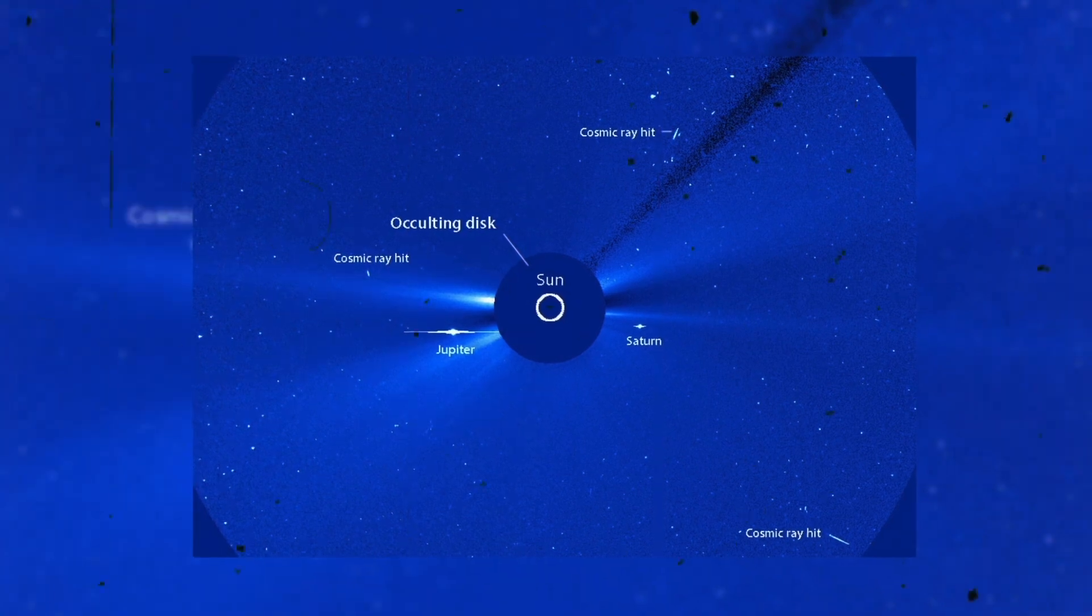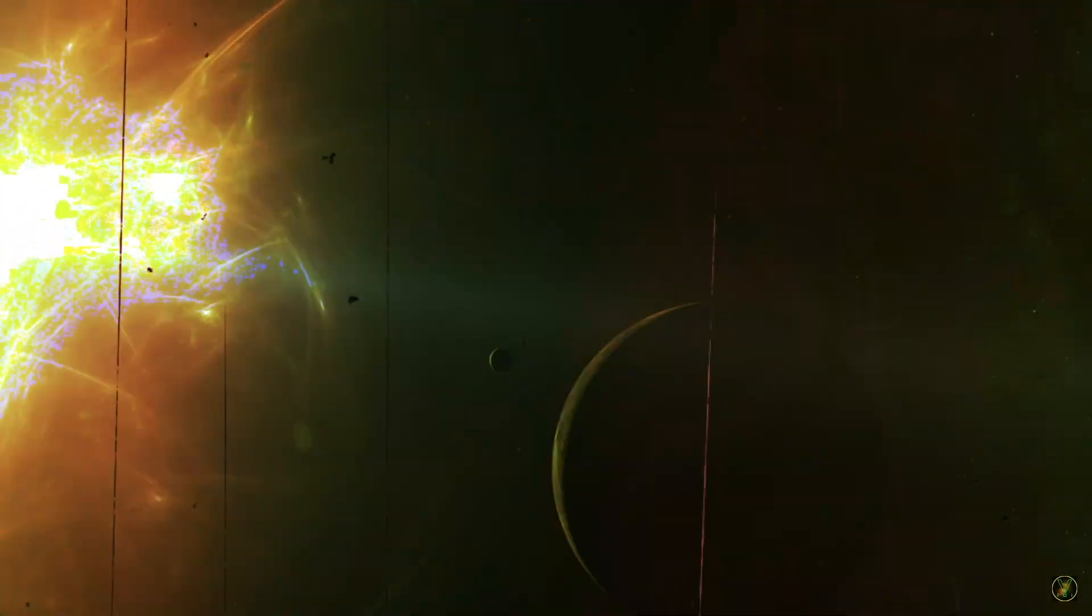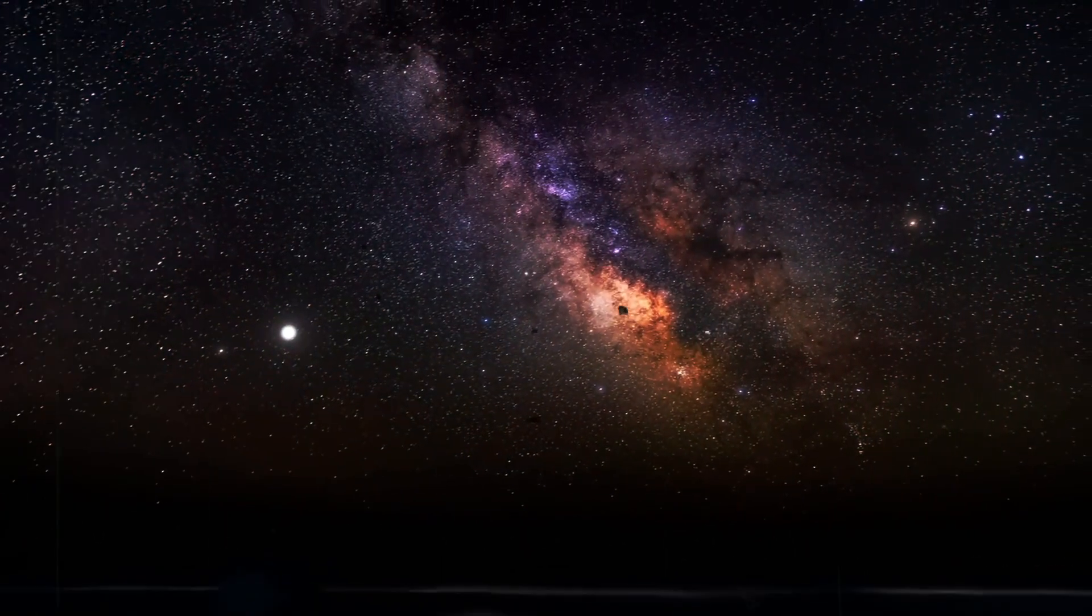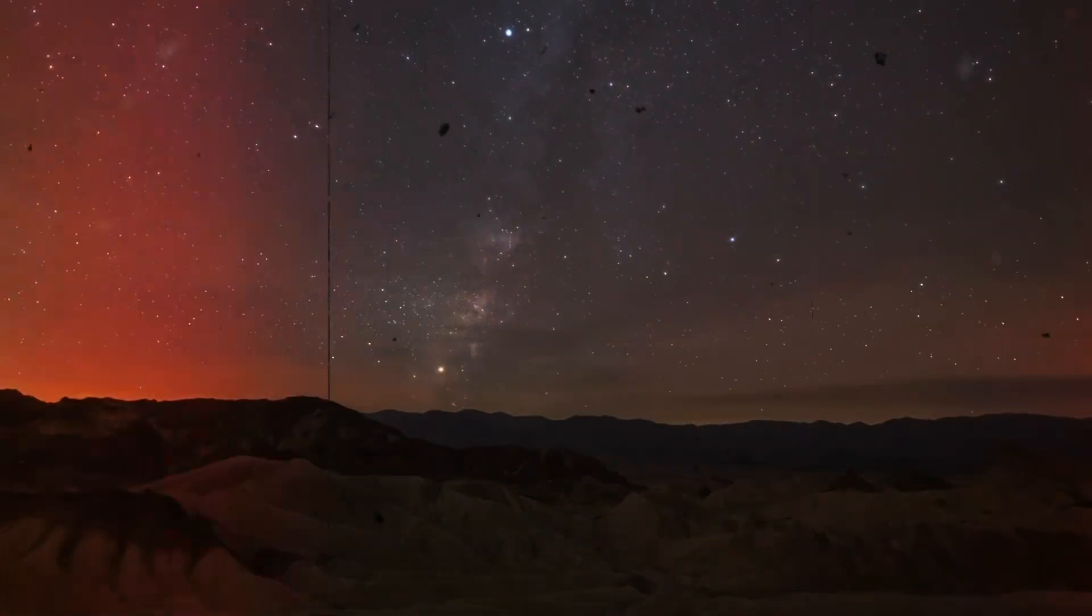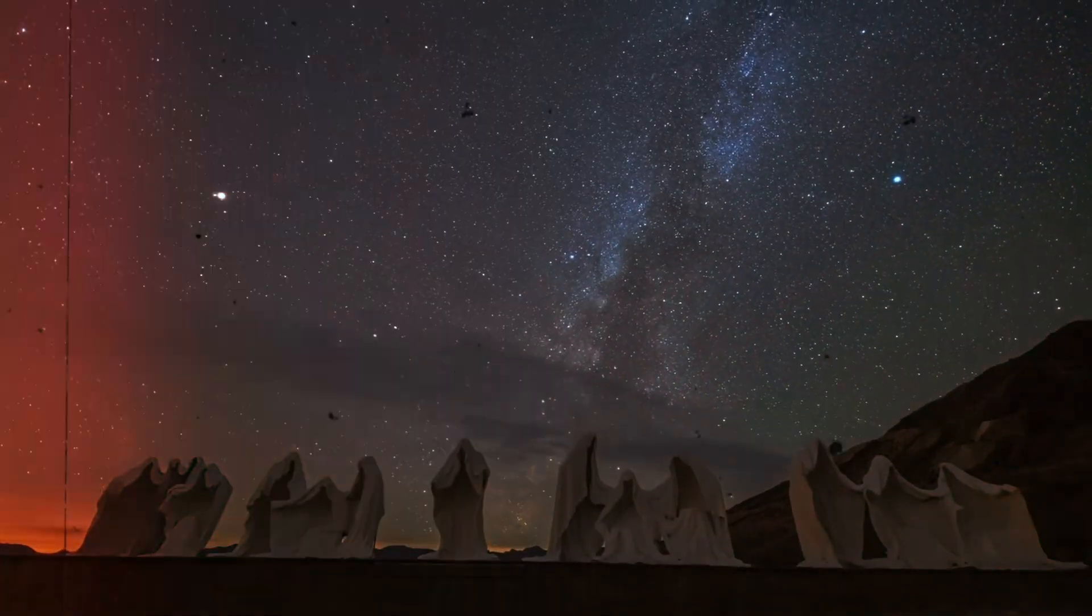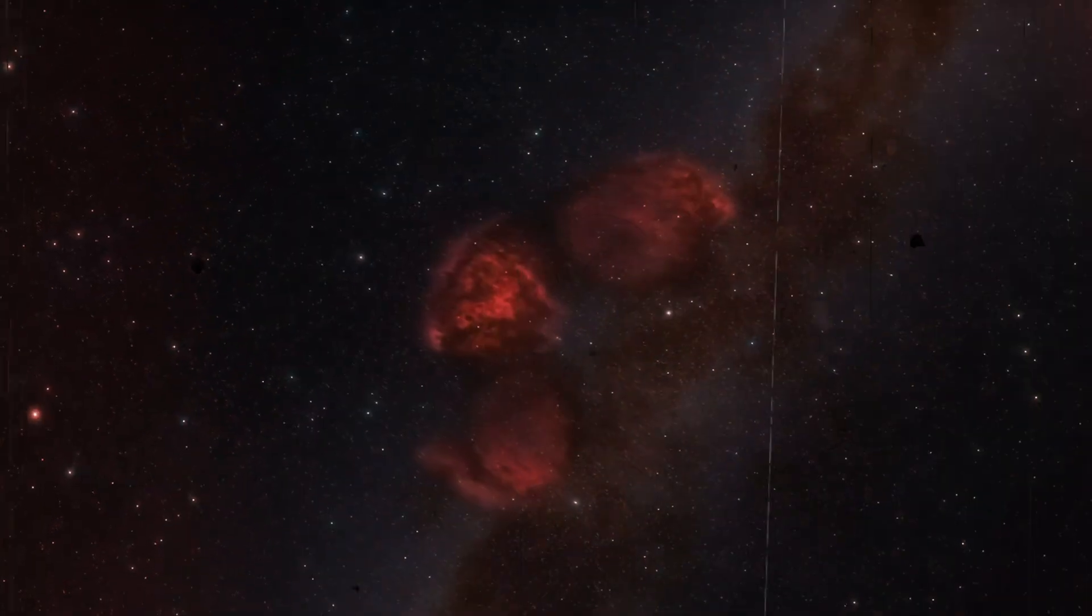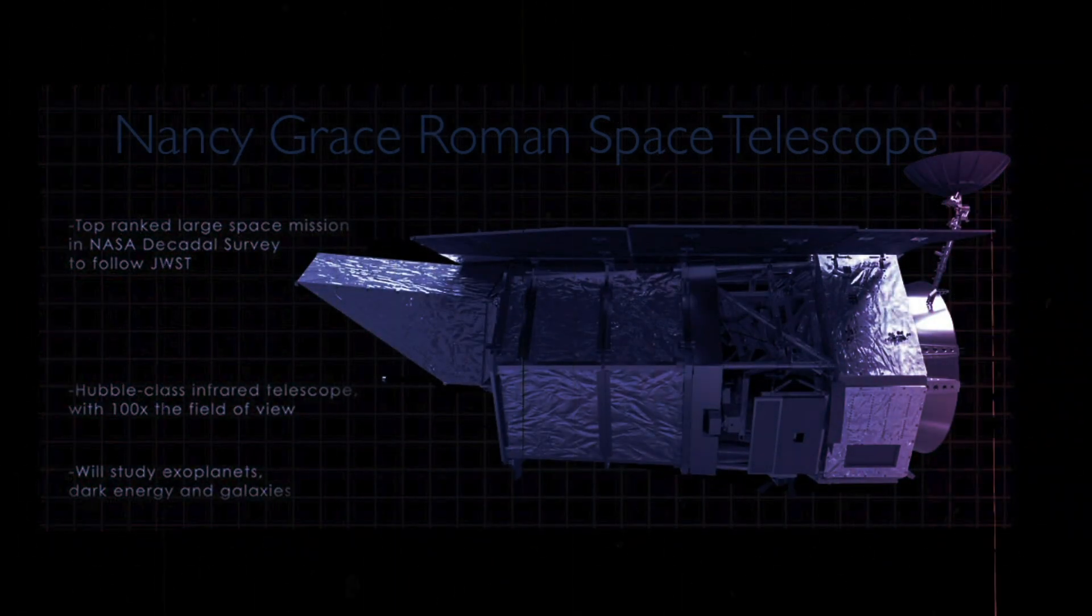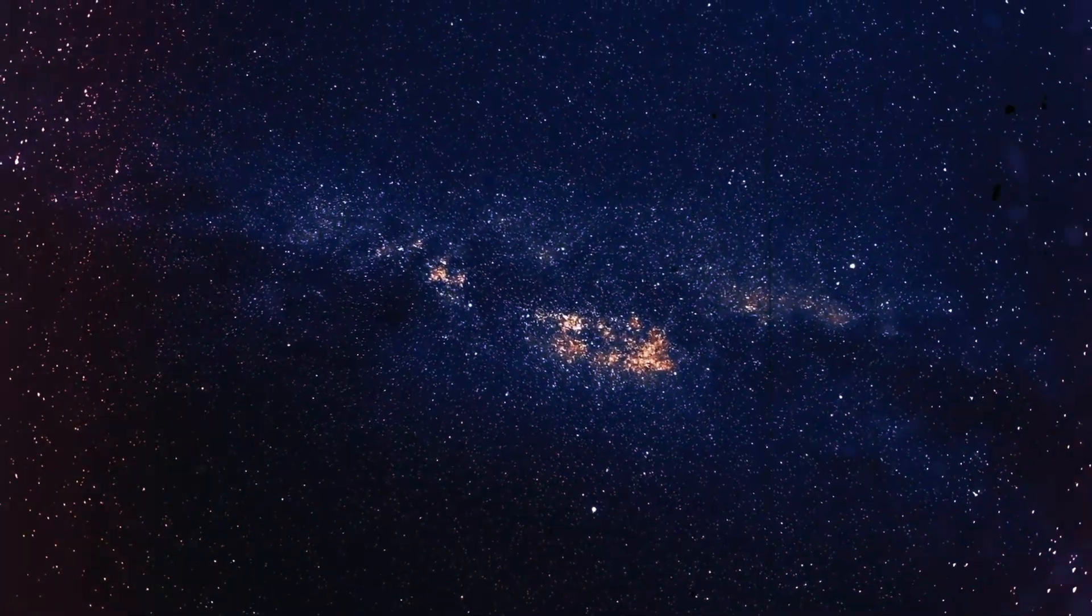In addition, the Nancy Grace Roman Space Telescope's coronagraph enables the direct imaging of exoplanets, revolutionizing our understanding of these distant worlds. By studying their atmospheres and compositions, scientists can assess their potential for habitability and search for signs of extraterrestrial life. The telescope's contributions in this field have the potential to reshape our perception of the cosmic landscape and our place in it.